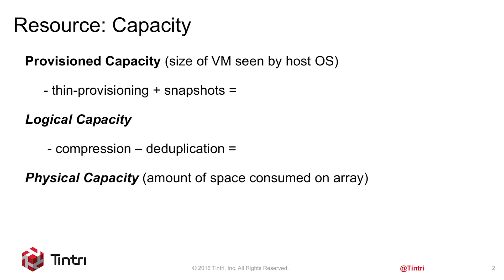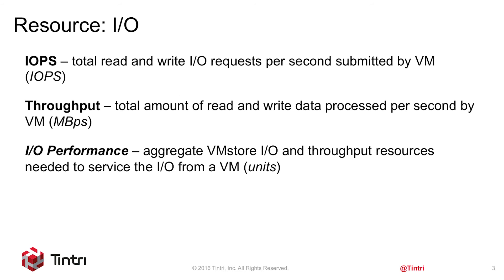As with capacity, there are three related metrics for IO. The first of these, IOPS, is basically the total read and write IO requests per second submitted by the VM, expressed in operations per second.